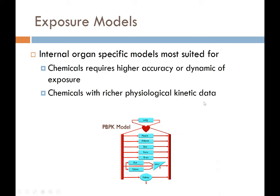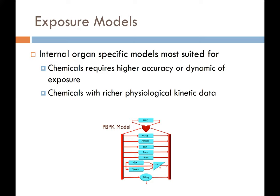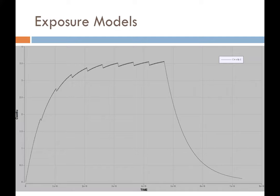This is more like ongoing research — CLICK 2 has not incorporated this yet — the internal organ-specific models. We are doing some research on this. These models are for chemicals that require higher accuracy or dynamic modeling of exposure, and they are suitable for chemicals with richer physiological kinetic data. This is an example from a research paper we are working on: it shows the concentration in the lung in an occupational setting with exposure on and off during the day and across the year. This is a simulation over 14 years, with a 5-year period at the end of exposure.